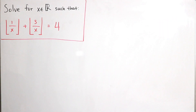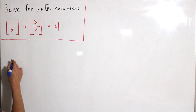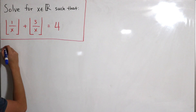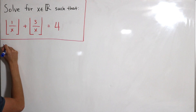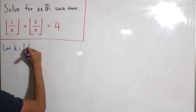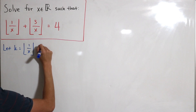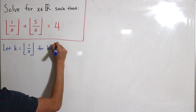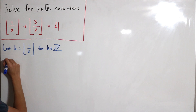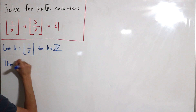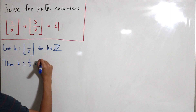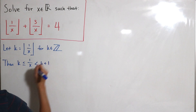Let's make a substitution: let k equal the floor of 1 over x, where k is some integer. By the floor function definition, this means k is less than or equal to 1 over x, which is strictly less than k plus 1.